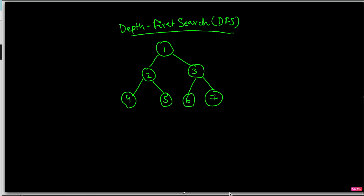Hello friends, today we are going to discuss depth first search in a binary tree. Depth first search is also called DFS, and it's also called a depth first traversal. As the name suggests, depth first means first we go to the depth and then we come back.